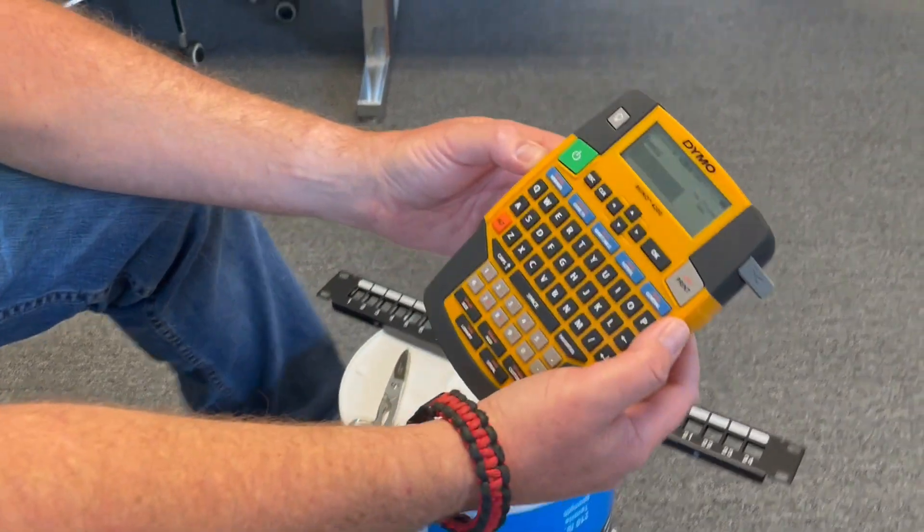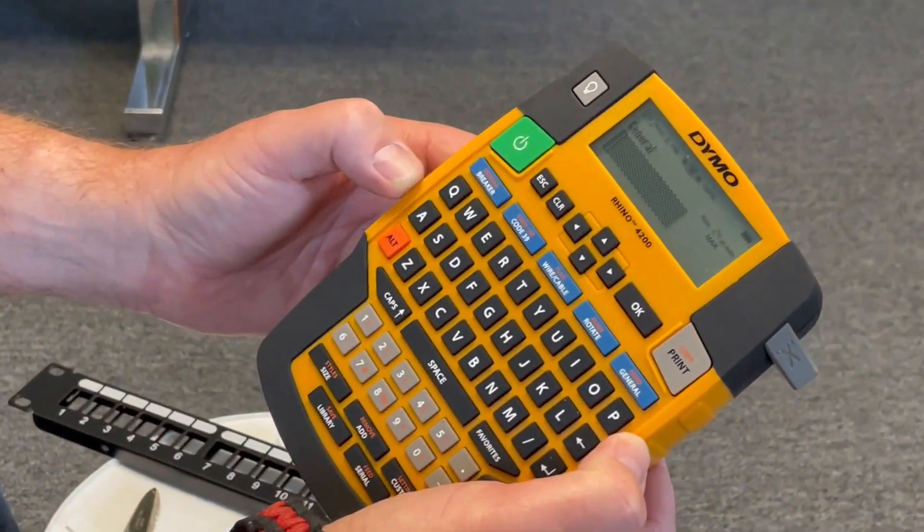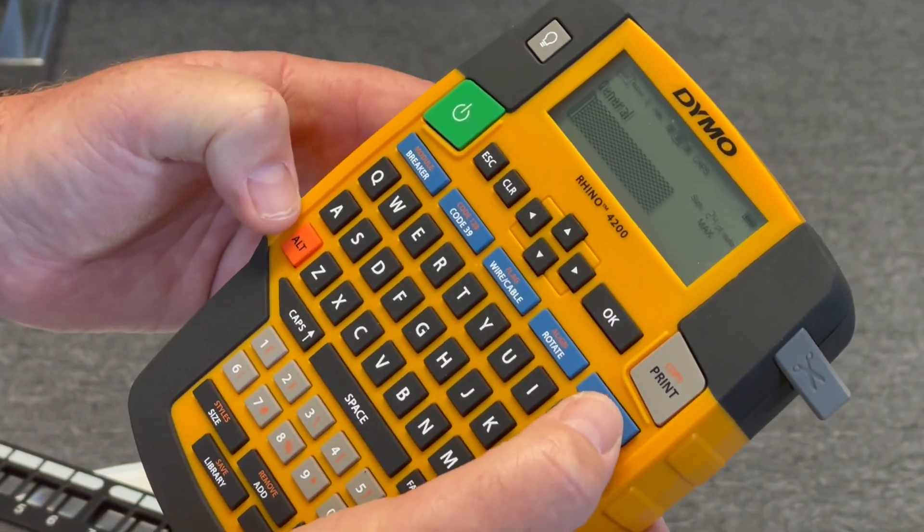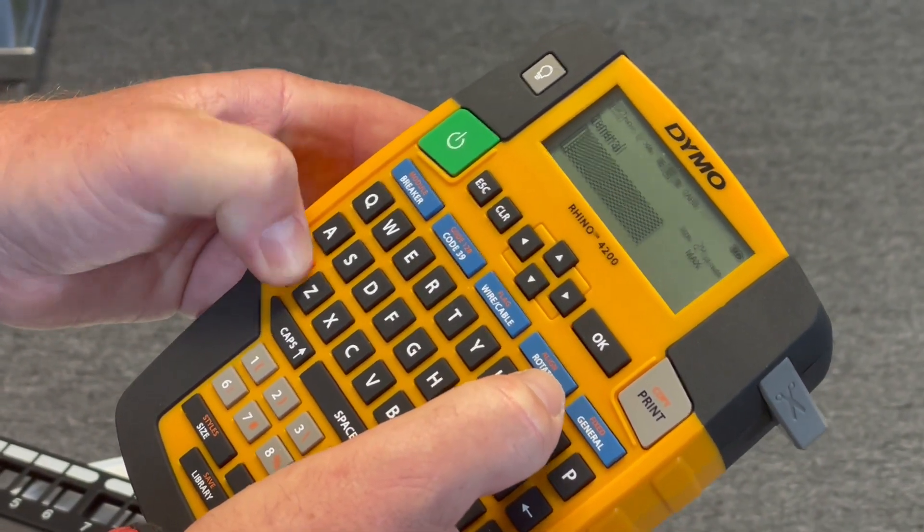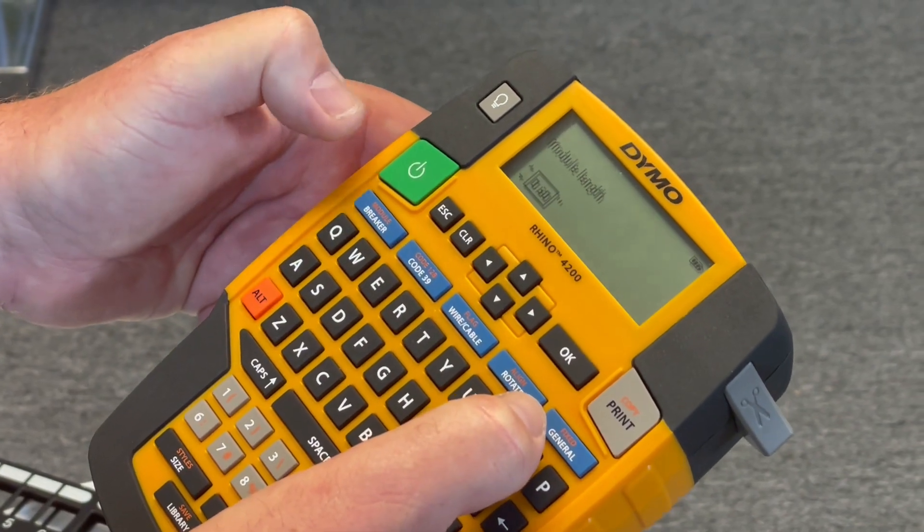So we use the 4200s and the big deal is we can use all these kinds of different buttons, but for a patch panel we're going to hit Alt Breaker or Modular.